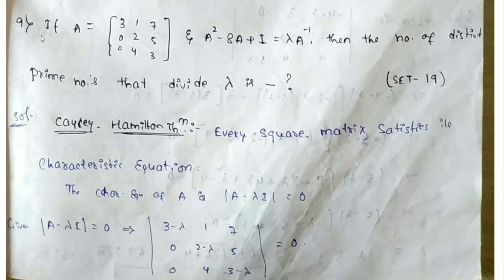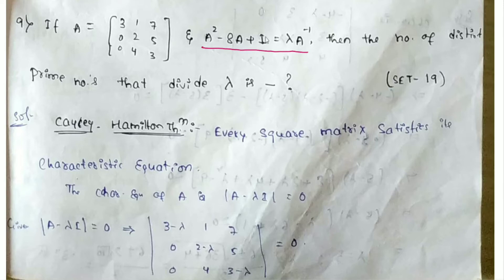Today's first question: given matrix A = [[3,1,7],[0,2,5],[0,4,3]], and the equation A² - 8A + I = λ·A⁻¹, we need to find the number of distinct prime numbers that divide λ.